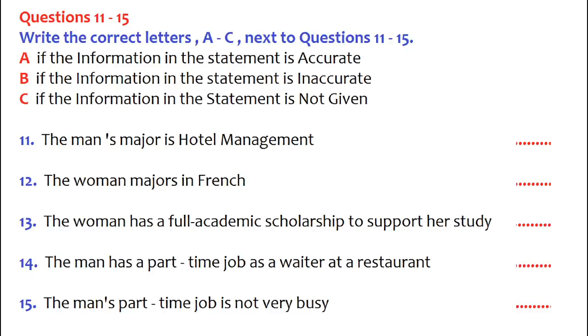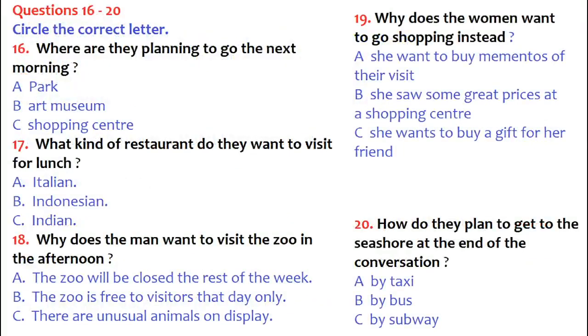So, do you have a part-time job to support yourself through school? Well, fortunately for me, I received a four-year academic scholarship that pays for all of my tuition and books. Wow, that's great. Yeah, how about you? Are you working your way through school? Yeah, I work three times a week at a restaurant near campus. Oh, what do you do there? I'm a cook. How do you like your job? It's OK. The other workers are friendly and the pay isn't bad. Before you hear the rest of the talk, you have some time to look at questions 16 to 20. Now listen and answer questions 16 to 20.